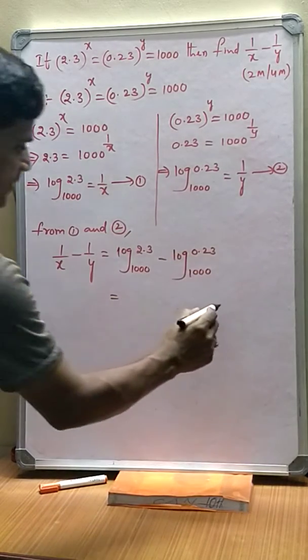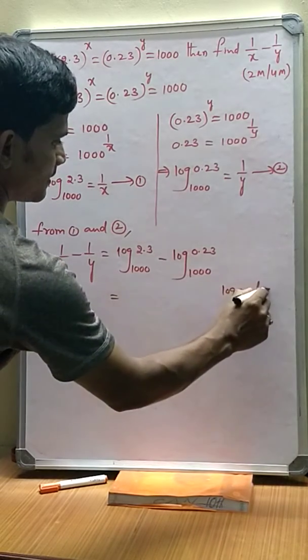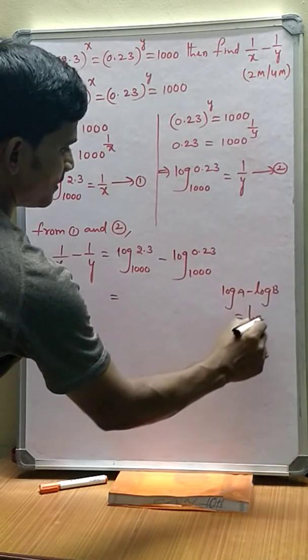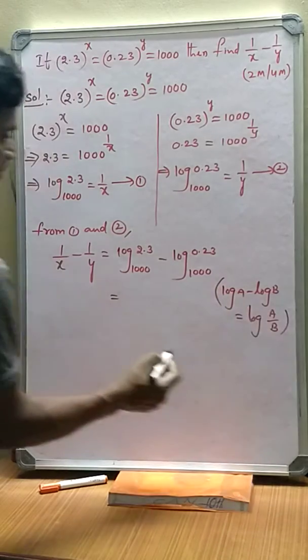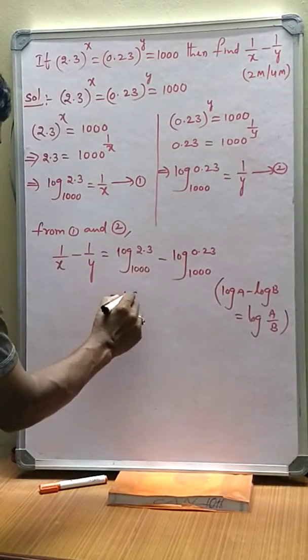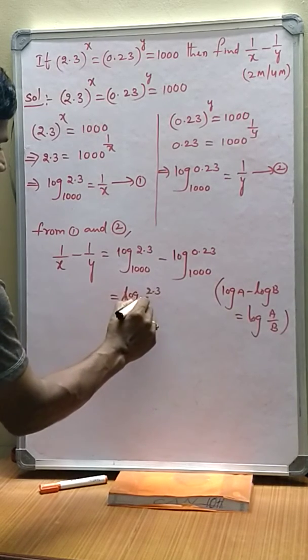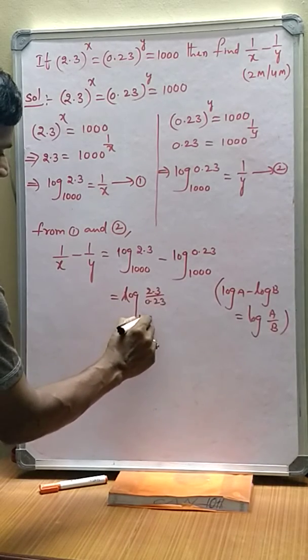Log A minus log B can be written as log A by B. From this formula, we can write this as log 2.3 over 0.23 base 1000.